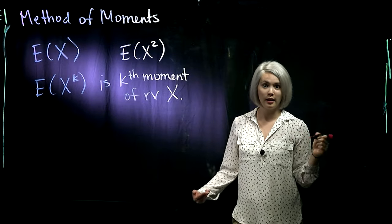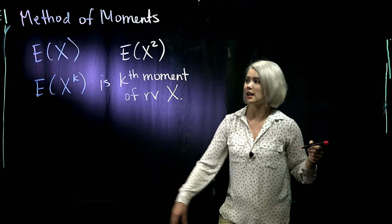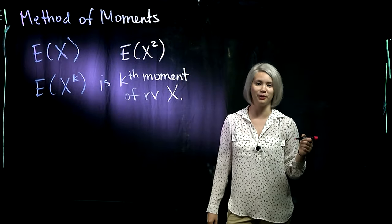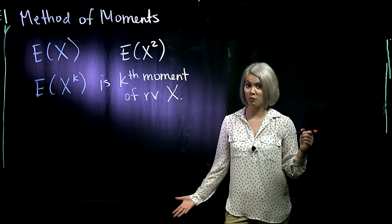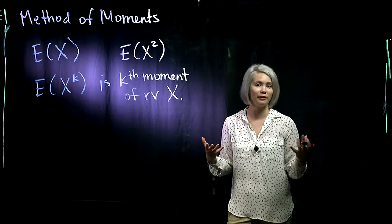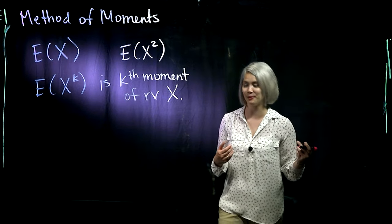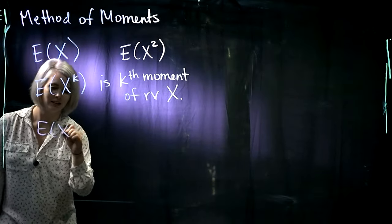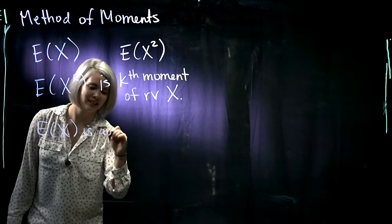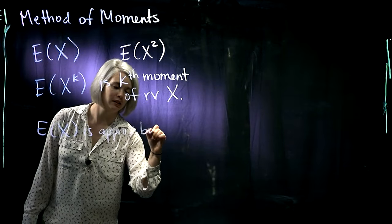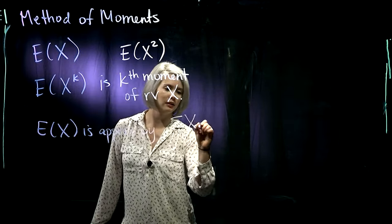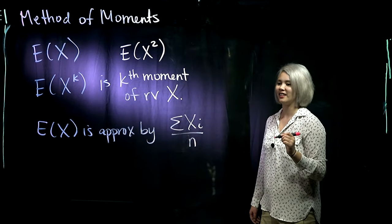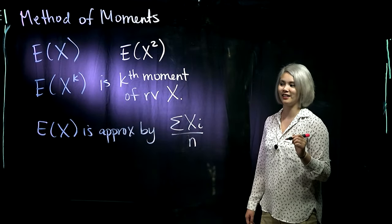Something that you learned in any intro stat class is how to approximate that population mean. What you learned is take a sample of size n and find the sample mean. So there's our estimate for the first moment.